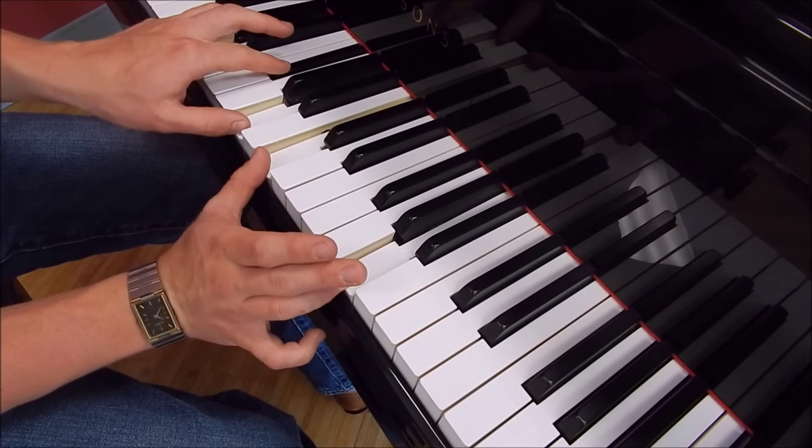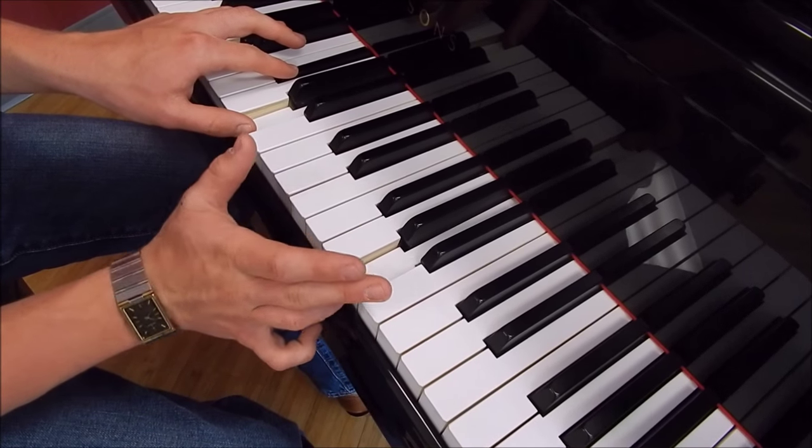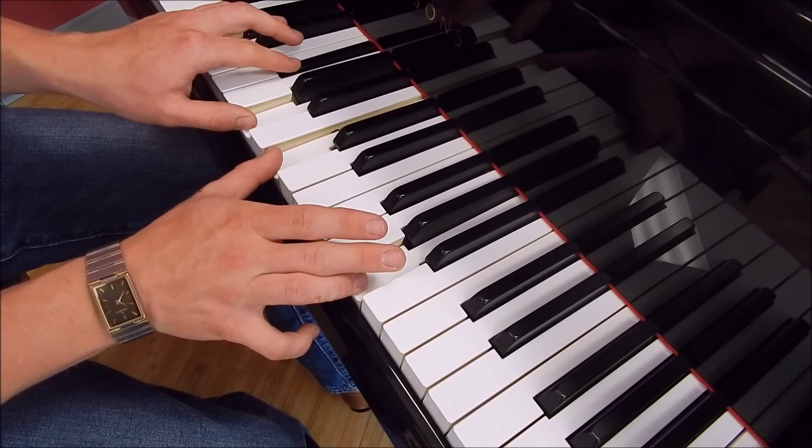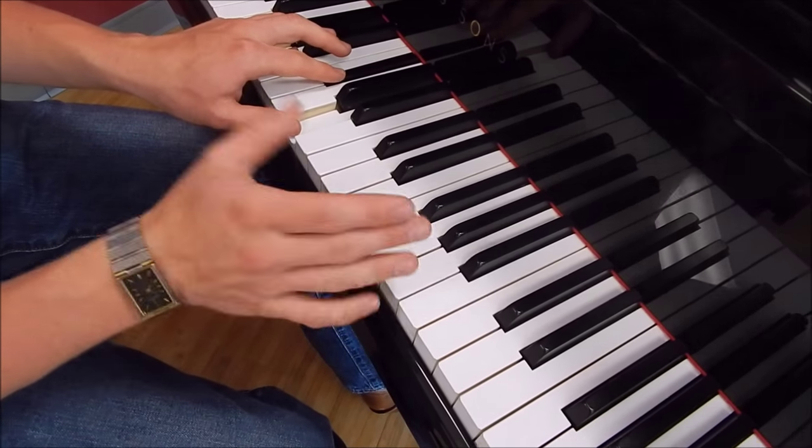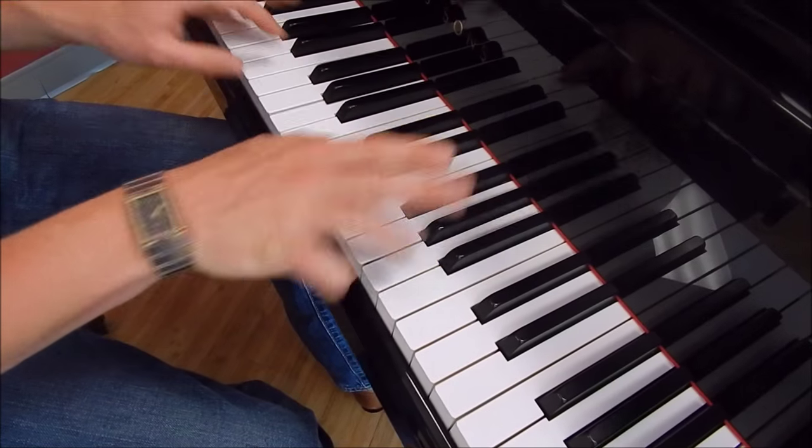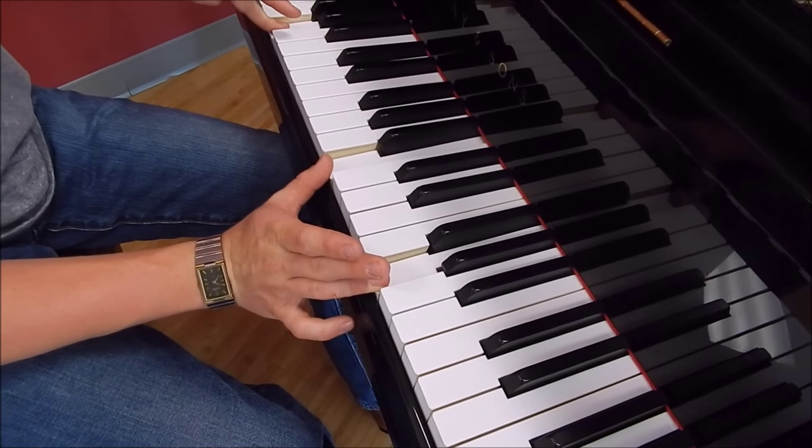Which on a D chord would be the minor 7th and the 5th. And then you go back up to these, back up to the D and the B. And that ends your turnaround.